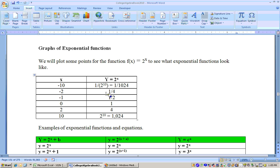2 to the negative 2nd would be 1 over 4. 2 to the negative 1st is 1 over 2. Anything to 0 is 1. 2 squared is 4. 2 to the 10th is 1024.